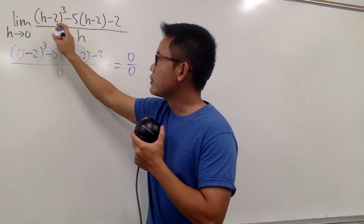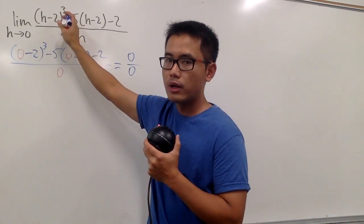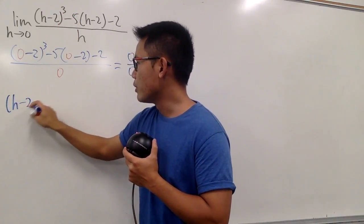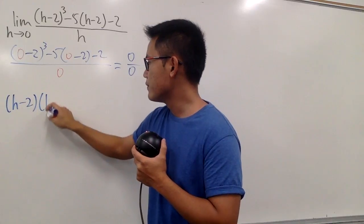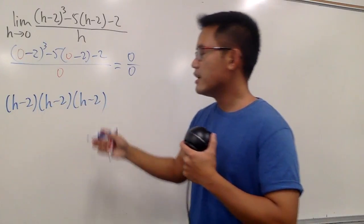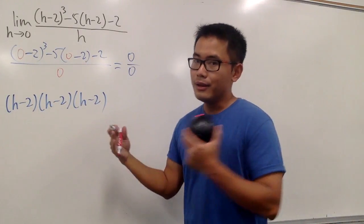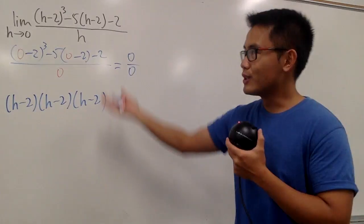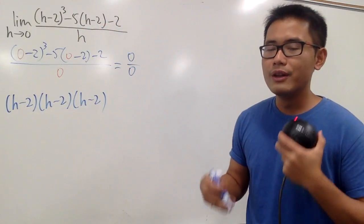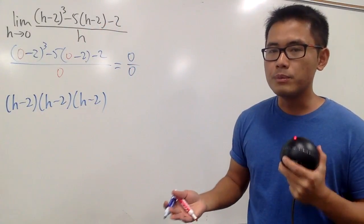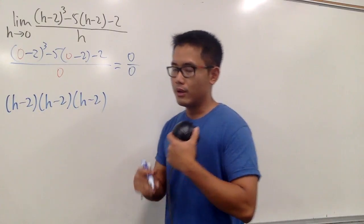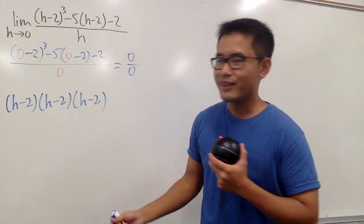For (h-2) to the third power, let me just write it down three times and multiply it out. Yes, there is a formula for multiplying things out like that — Pascal's triangle, the binomial theorem, or whatsoever — but I think this is more clear for everybody.